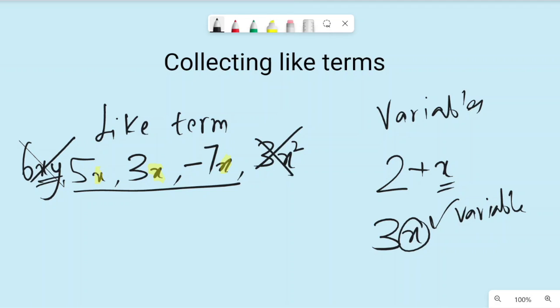You must have same variable to come under like terms, like 6y, 4y, negative 23y, 1000y. So these are like terms.